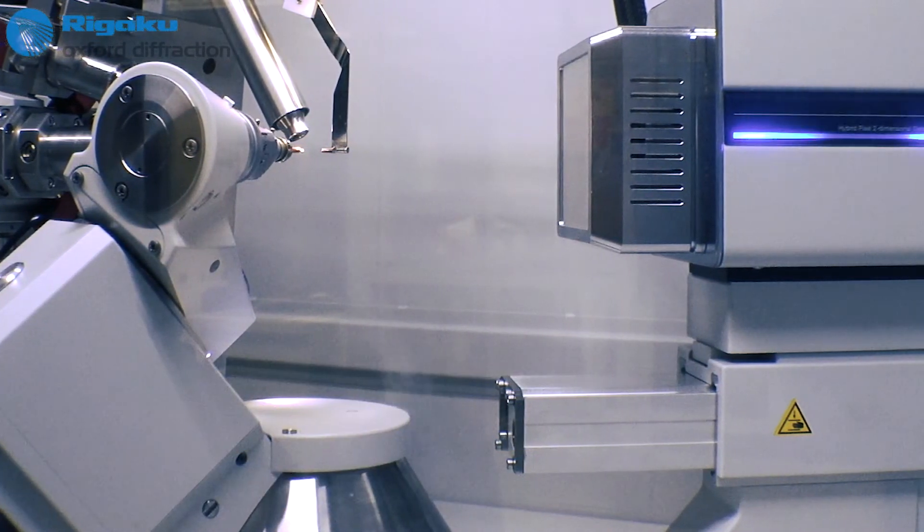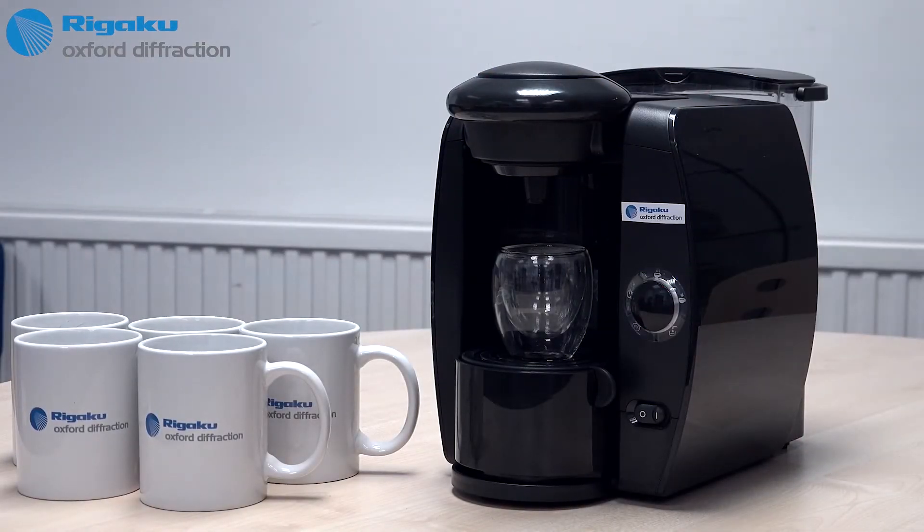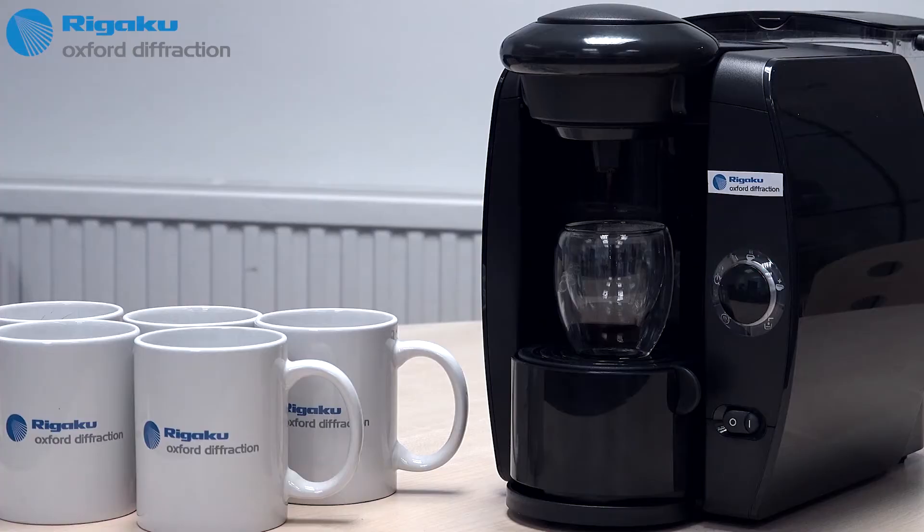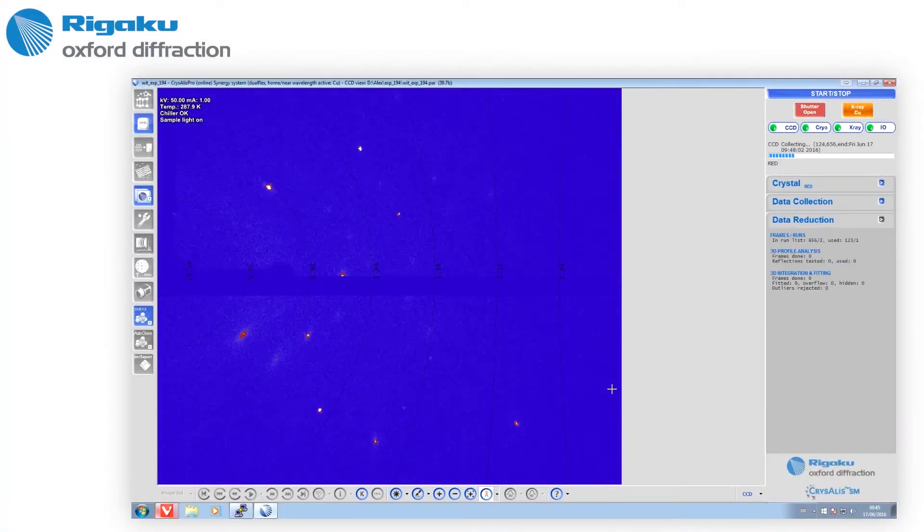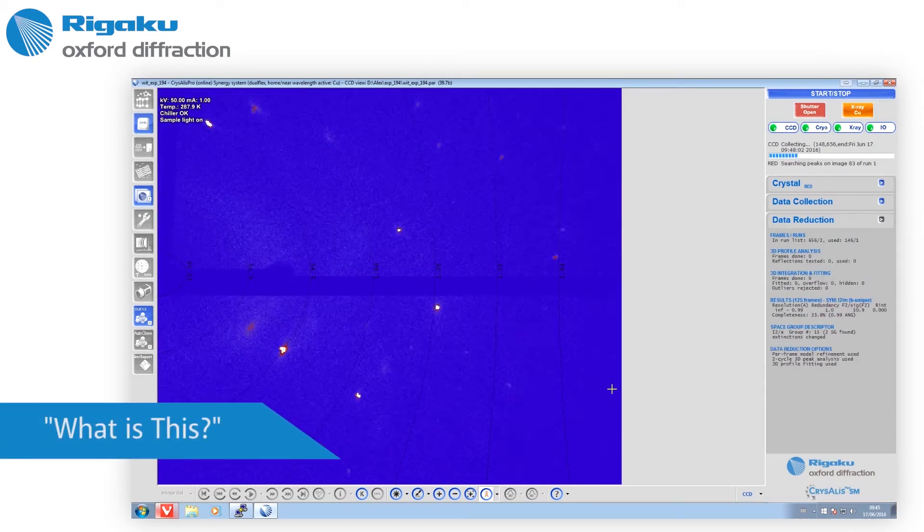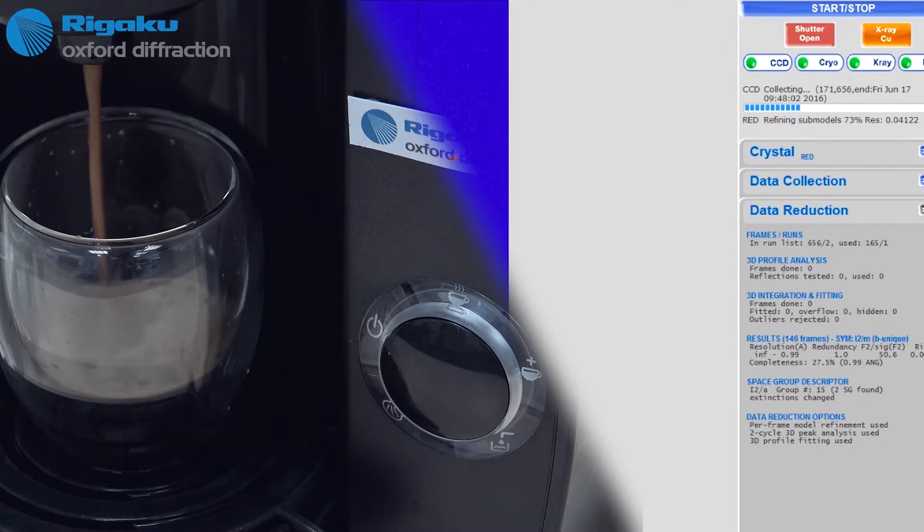In the not too distant past, crystallographers would often drink a cup of coffee as they waited for their diffractometer to evaluate a new crystal. With the new Crystal Lab Synergy diffractometer incorporating the revolutionary What Is This feature, you can actually collect your data, solve and refine your structure before you can even make a cup of coffee.